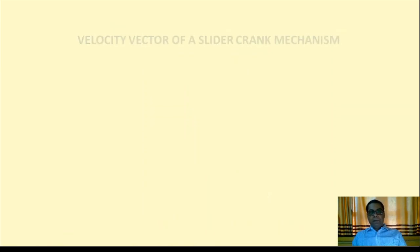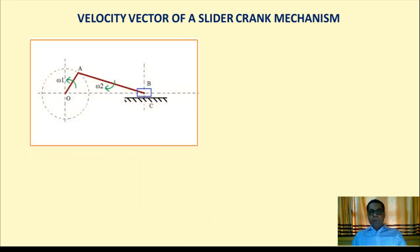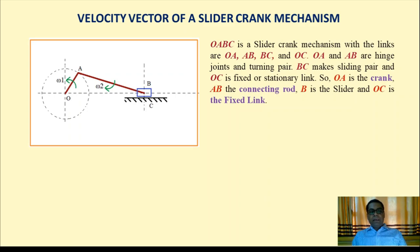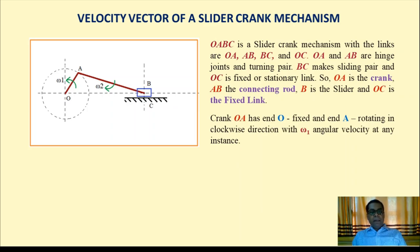To explain the velocity vector of a slider crank mechanism, consider the image in the slide. There is a crank OA rotating anti-clockwise, AB is the connecting rod, and B is the slider block supported on fixed point C. OA and AB are hinge joints forming turning pairs, BC is a sliding pair, and OC is the stationary link.